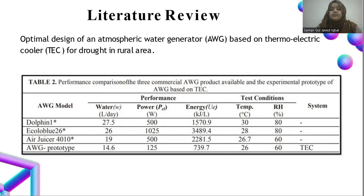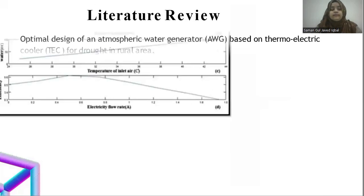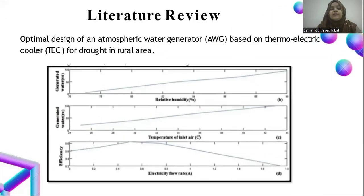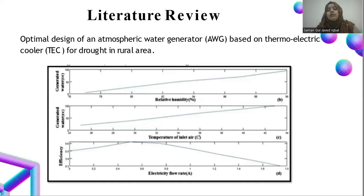This TEC-based prototype appears to be the more efficient AWG model compared to the commercial industry models. As you can see in the graph, relative humidity has a direct relationship with water generation: as relative humidity increases, water generation increases; as the temperature of the inlet air increases, water generation also increases; and the air flow rate and efficiency have a somewhat linear relationship.